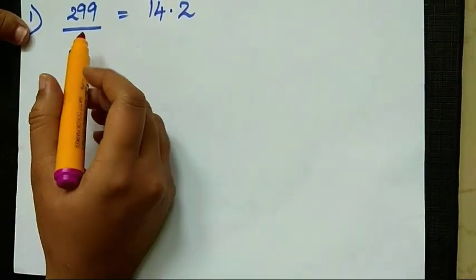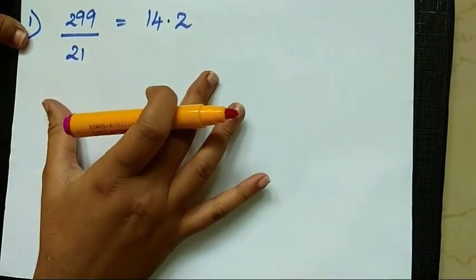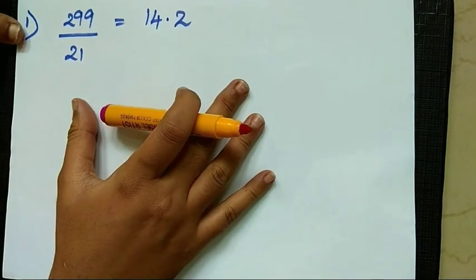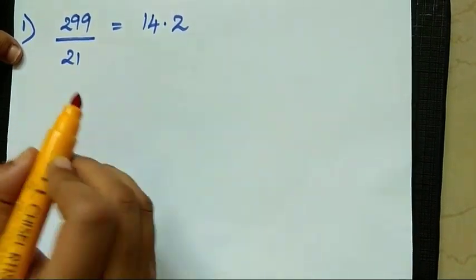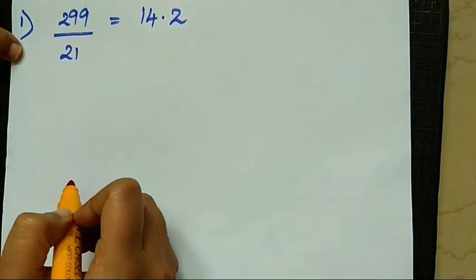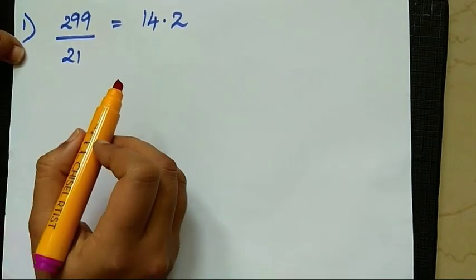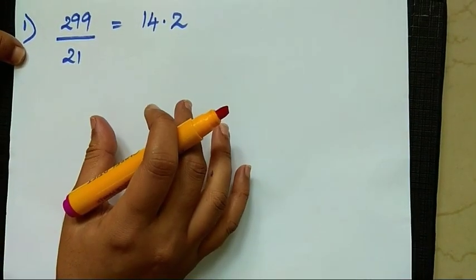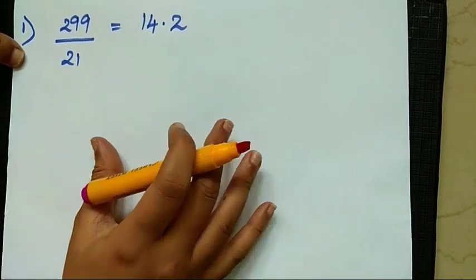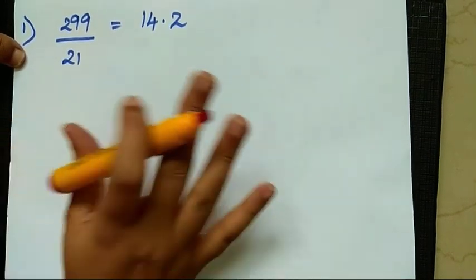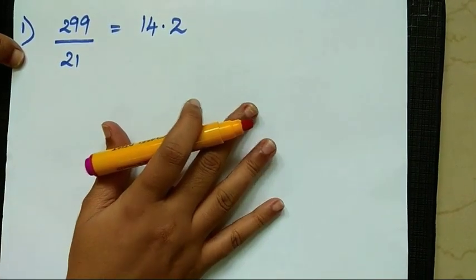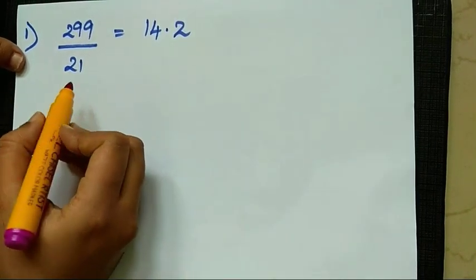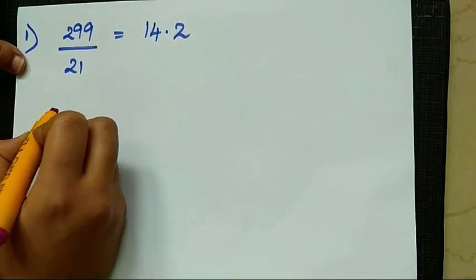We are going to show you an example, the answer, and the exact answer in the calculator. We will show you the exact answer in the method. If we are going to use this method, we will show you the answer. Now, we will show you the approximate answer.